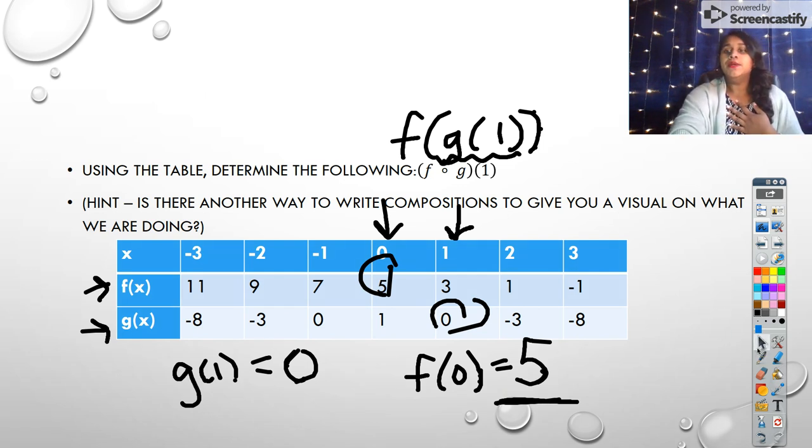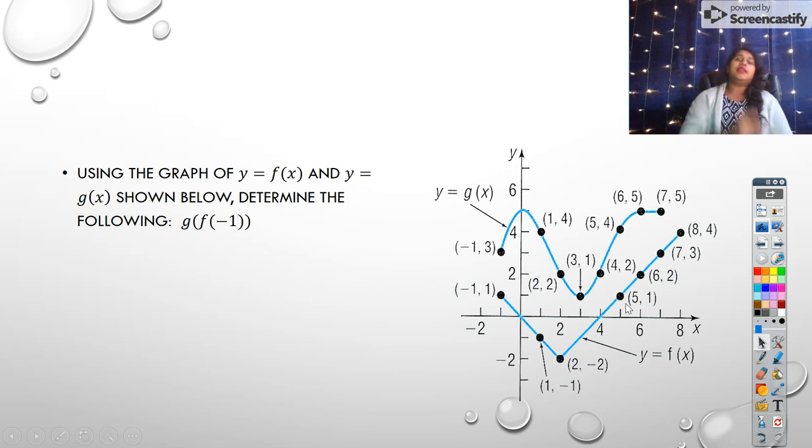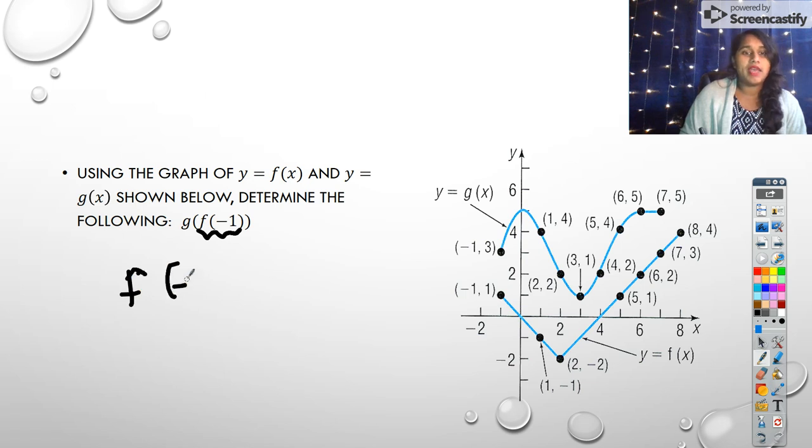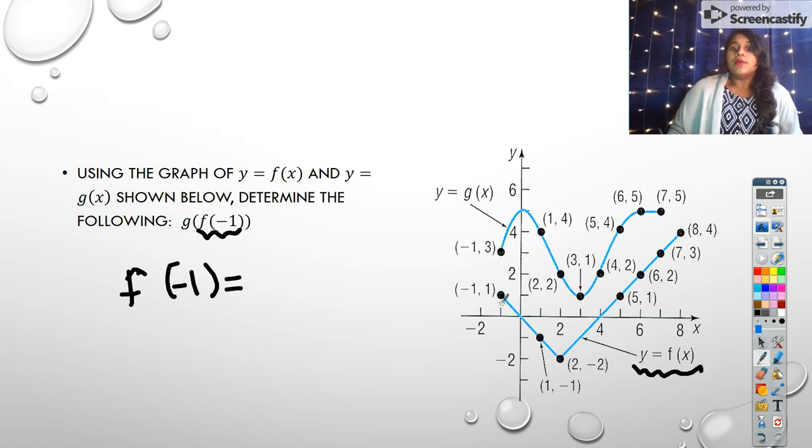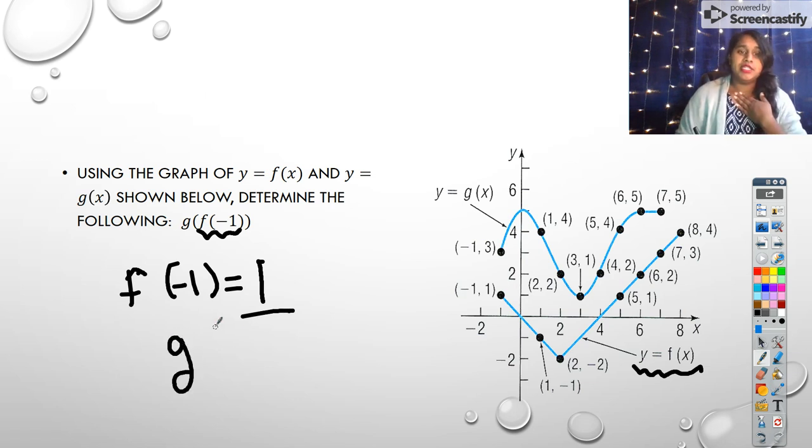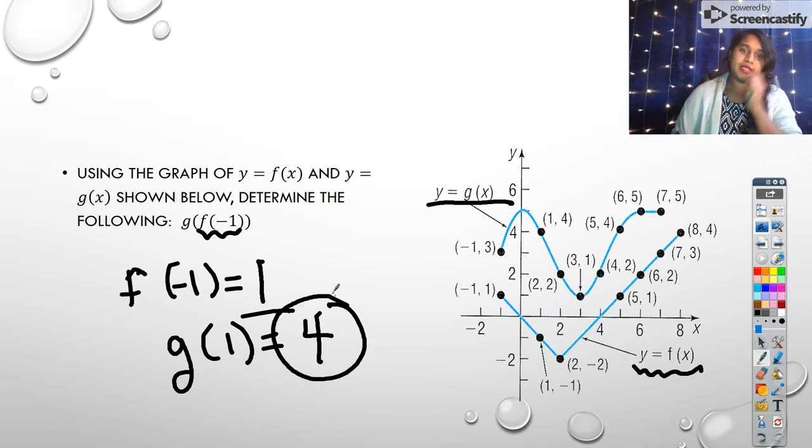Oh, my gosh. I have hiccups. Here we have another one, except this time instead of a table, you're actually given the graph for their plot points. So again, we break it down. What's the inside going to be equal to? f of negative 1 is equal to. I find my y equals f of x. And it's this bottom line. I can see it right here. And I go to negative 1. And I see that its value is positive 1. So then I plug in g of 1. And I look at my g of x, which is right up here. I go to the x value 1. And I see that it's equal to 4.